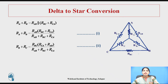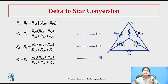Then we write Equation 3 for R_C plus R_A: R_C + R_A = R_CA(R_AB + R_BC) / (R_AB + R_BC + R_CA).